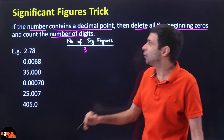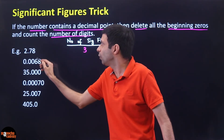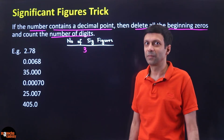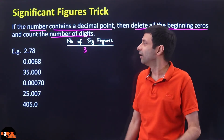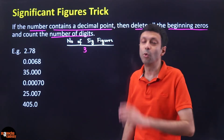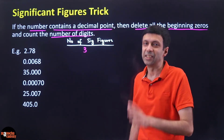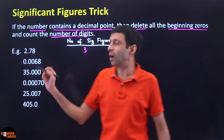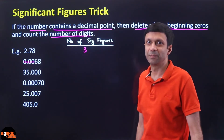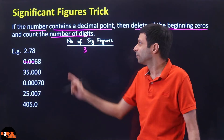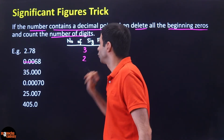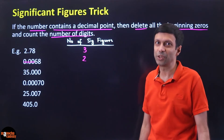Now if there is a measurement like 0.0068, how many significant figures? There is a decimal point, so delete all the beginning zeros. Strike out all those beginning zeros. How many digits are left? Only 6 and 8 — just 2 digits. So the answer is 2 significant figures.